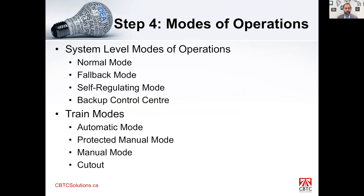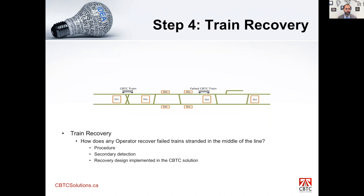Modes of operation — your system can take several modes. There's a normal mode, a fallback mode, a self-regulating mode, a backup control center — several modes at a system level that the operator would have to make a decision on. The trains also have their modes. Typical ones are automatic mode, protected manual mode, manual mode, and cutout mode. So you need to define what type of modes this system and the trains are going to be operating within.